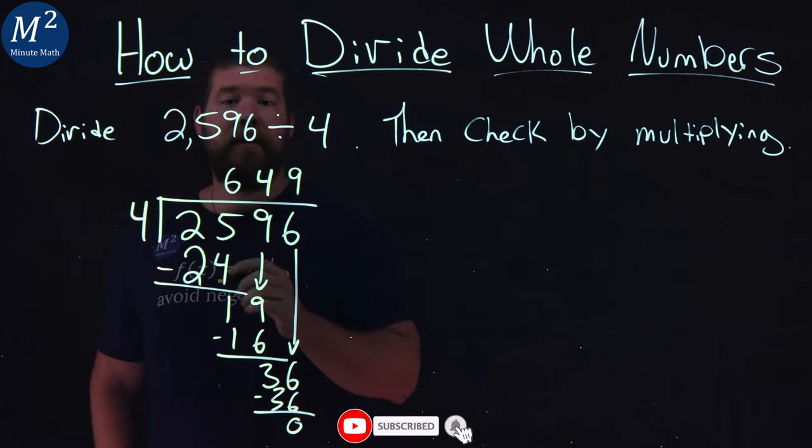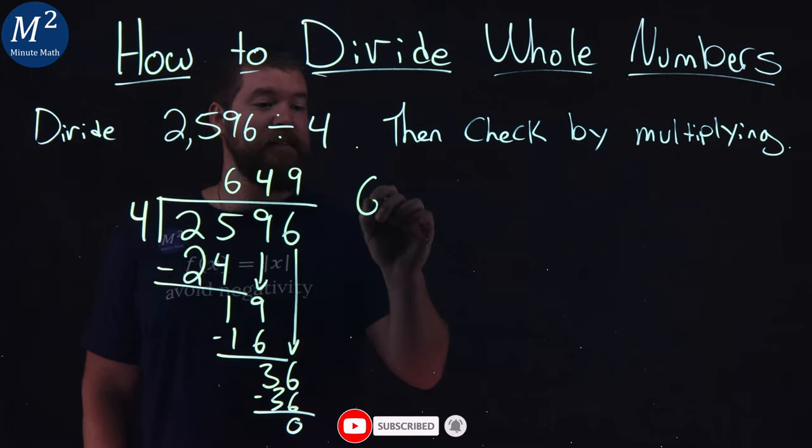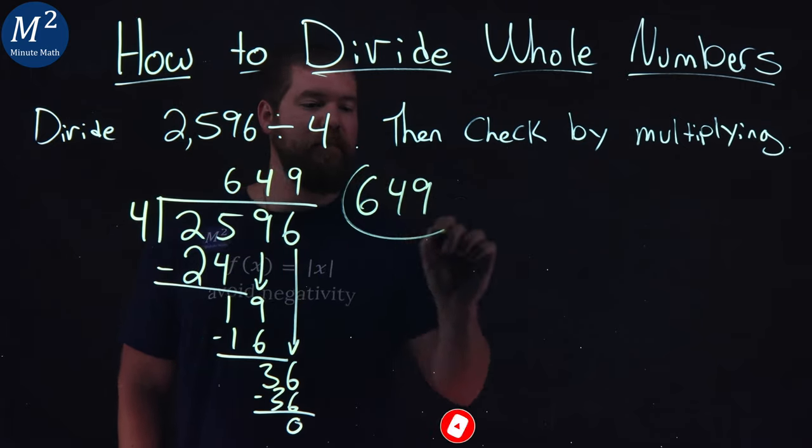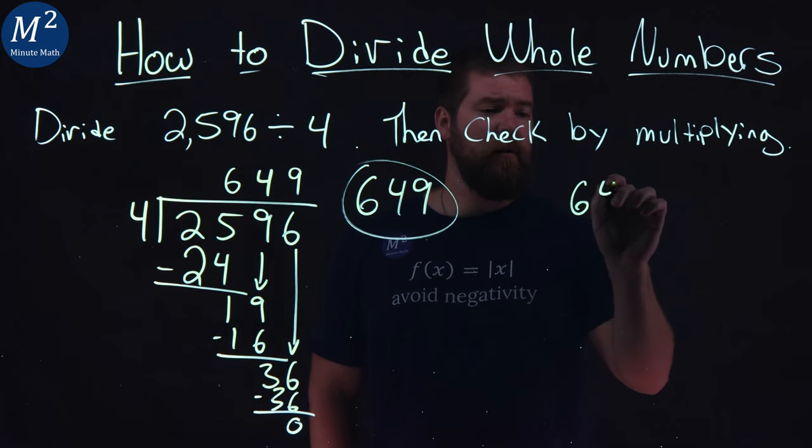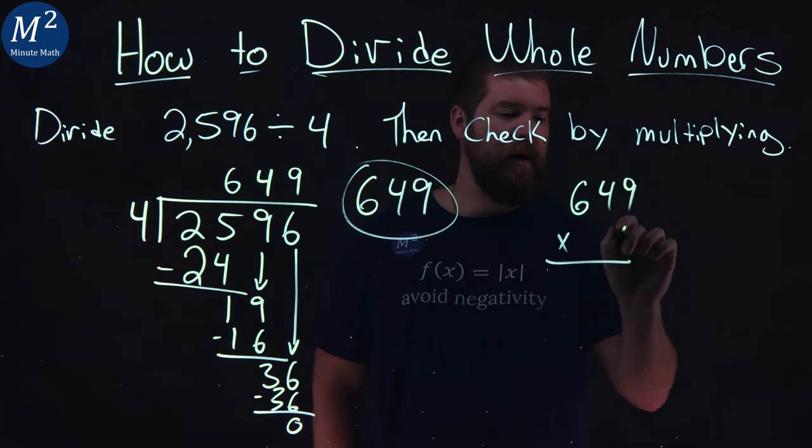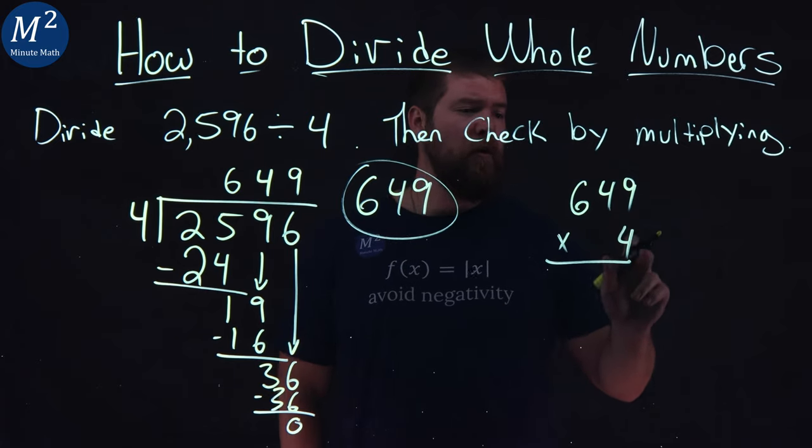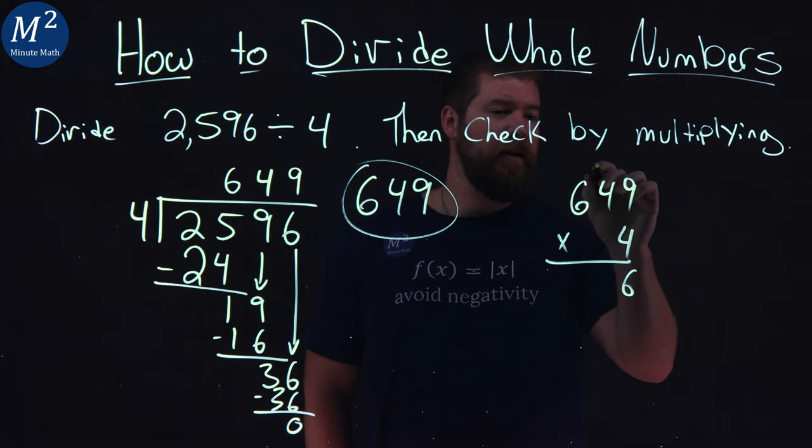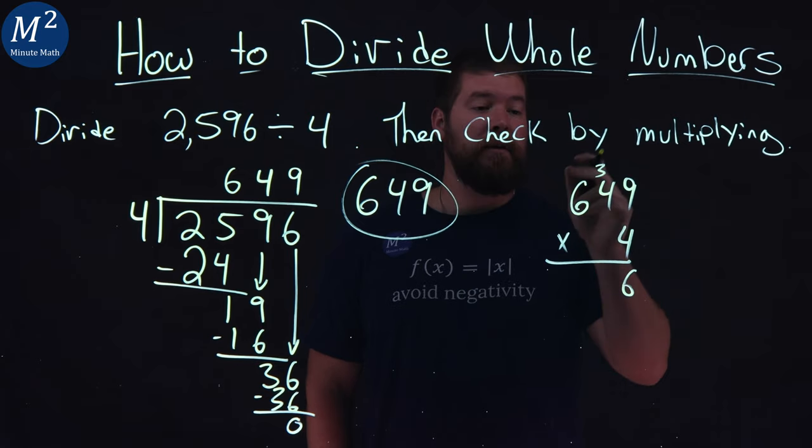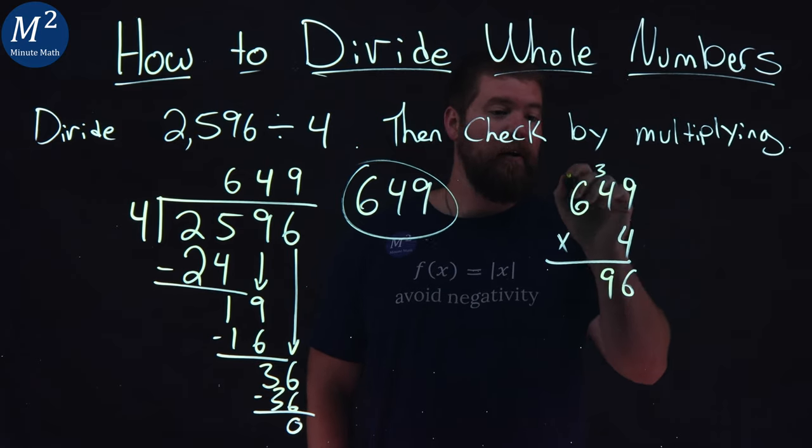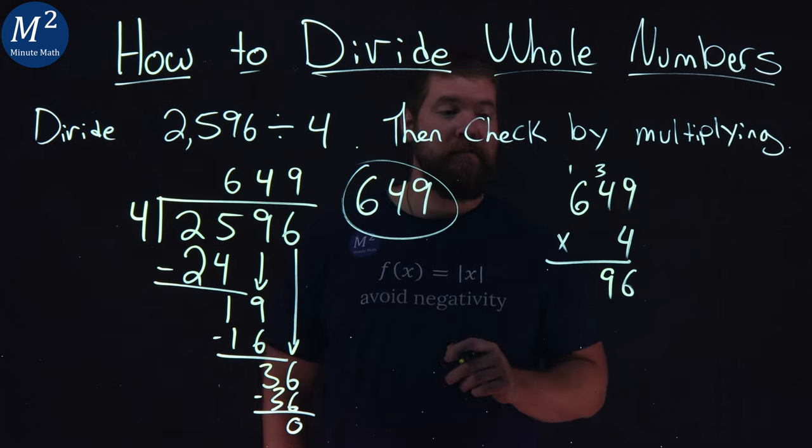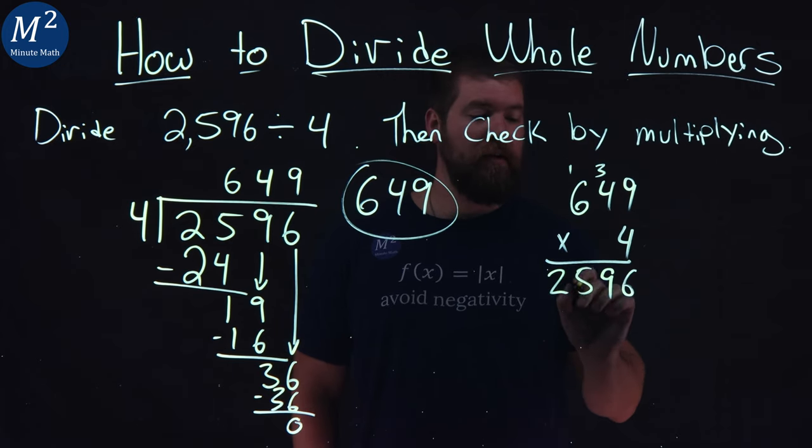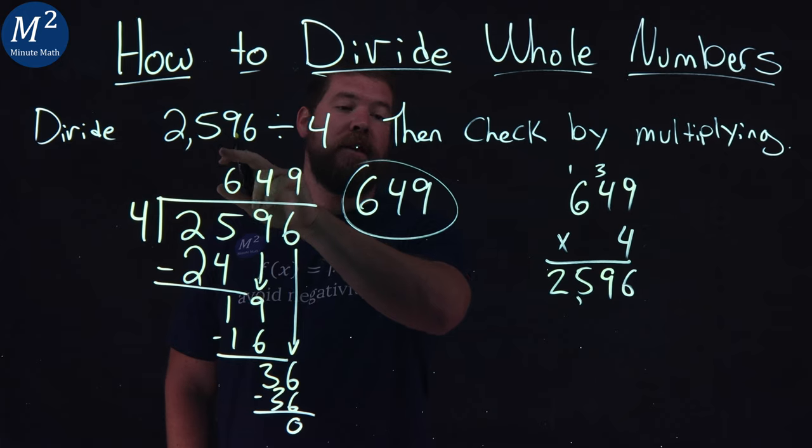So 2,596 divided by 4 is 649. Now let's check by multiplying. I'm going to take 649 and multiply it by 4. 4 times 9 is 36, write 6 and carry the 3. 4 times 4 is 16, plus 3 is 19, write 9 and carry the 1. 4 times 6 is 24, plus 1 is 25. And look, we got 2,596.